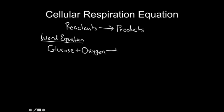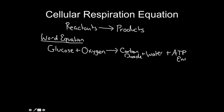We have our arrow here, indicating that our reactants — glucose and oxygen — are going to be broken apart and rearranged, and new chemical bonds will be formed to create our products. The products made in cellular respiration are carbon dioxide, water, and ATP energy.